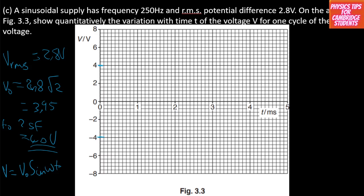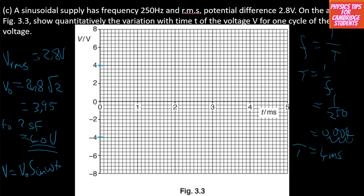We've also been given the frequency. The relationship between frequency and period is F equals 1 over T, so T equals 1 over F, which is 1 over 250, giving 0.004 seconds — that is 4 milliseconds. So when drawing our graph, the period is 4 milliseconds. The sine wave goes through one full cycle from 0 to 4 milliseconds, with peak values of plus 4 and minus 4 volts.